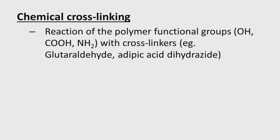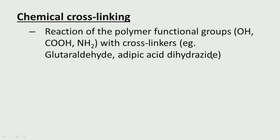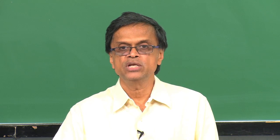Now let us look at chemical cross-linking, where a reaction takes place and bonds are formed. This involves the reaction of polymer functional groups like OH, COOH, or NH2 with cross-linkers like glutaraldehyde, adipic acid, or dihydrazide. Many polymers contain these groups — PVA contains OH, acrylic acid contains COOH, and some sugars have NH or amine or amide groups. They all cross-link using glutaraldehyde, which is very commonly used.